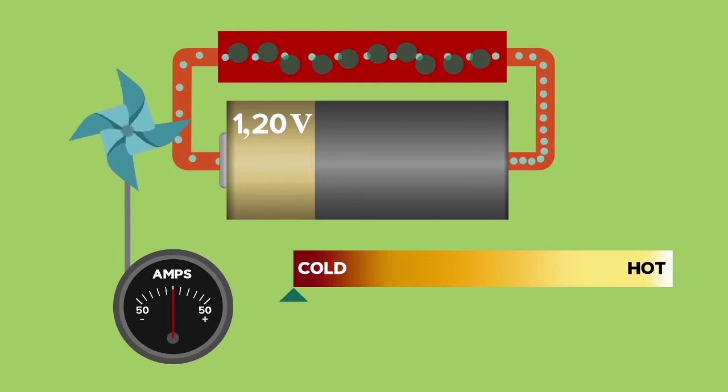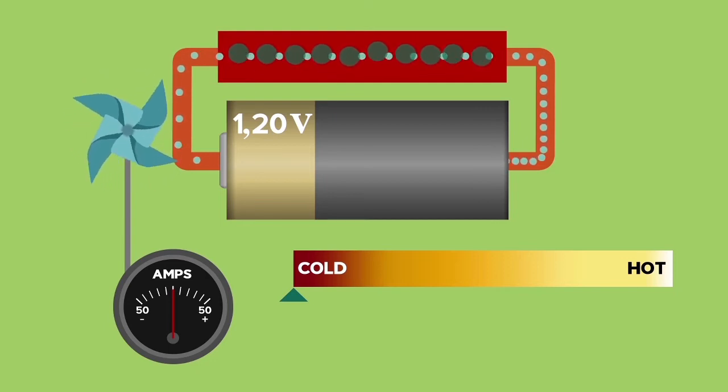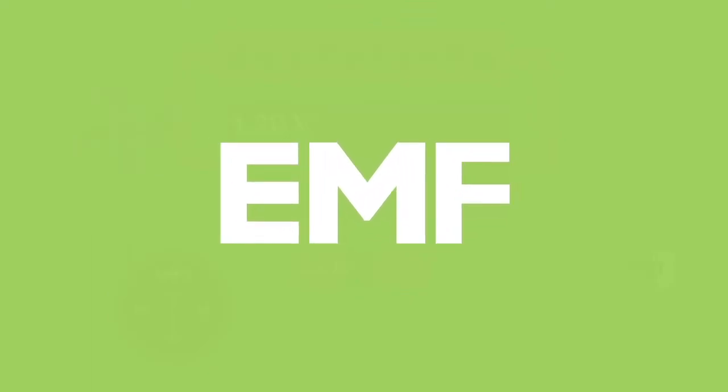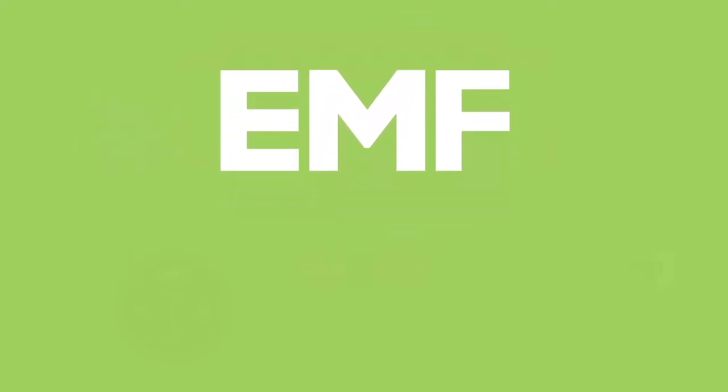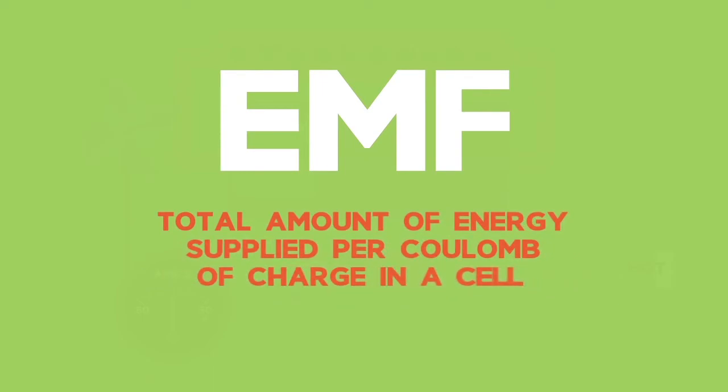The total amount of energy that a battery can supply is called the EMF. By definition, the EMF is the total amount of energy supplied per coulomb of charge in a cell. It's sometimes called the total voltage.